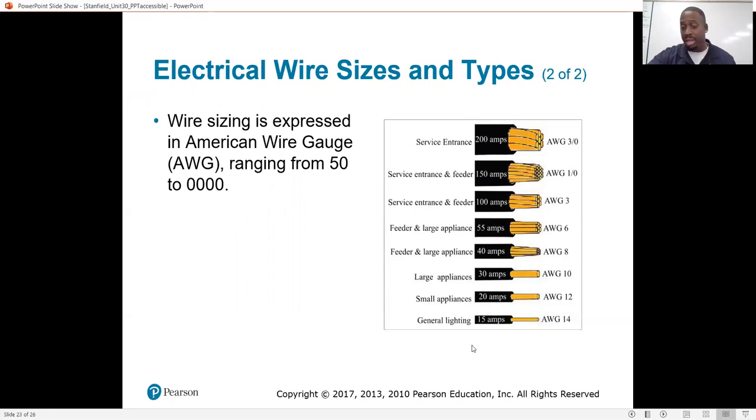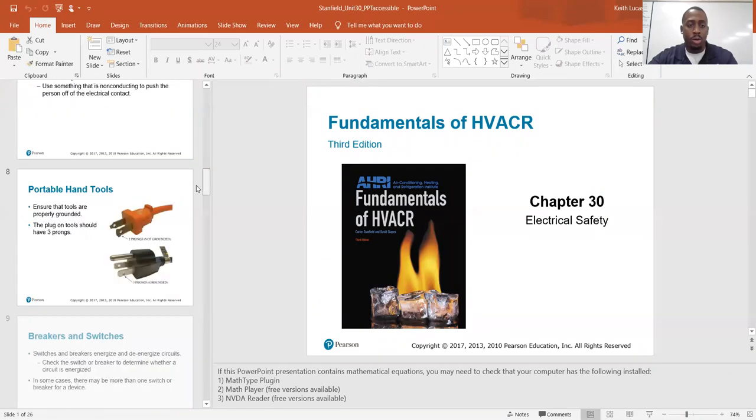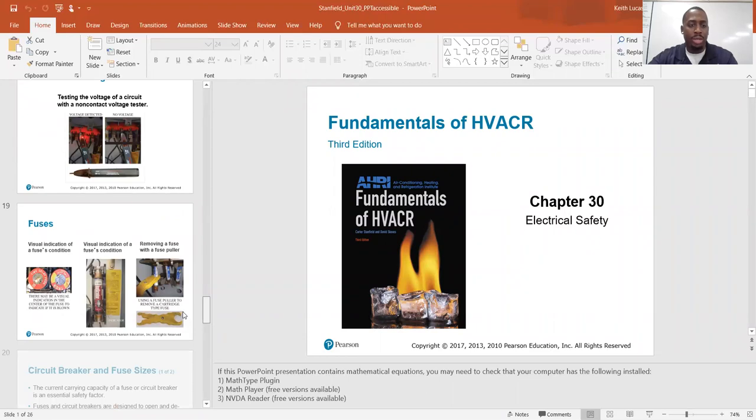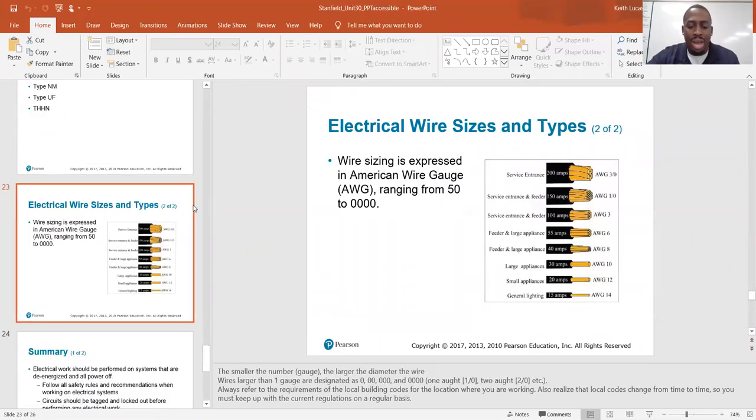I got to find my way back to where I was. Here we go. So the smaller the number, the larger the diameter of the wire. Wires larger than one gauge are designated as 0, 00, 000, and 0000. Always refer to the requirements of the local building codes for the location where you are working. Also, realize that local codes change from time to time, so you must keep up with the current regulations on a regular basis.